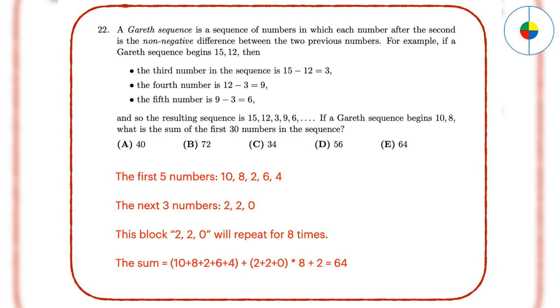Question 22: This is a pattern game. You need to find the pattern for the Gareth sequence. The first five numbers in the sequence are 10, 8, 2, 6, 4. The next three numbers are 2, 2, 0, and this block of three numbers repeat 8 times. Now you can calculate the sum of all numbers, which is 64.